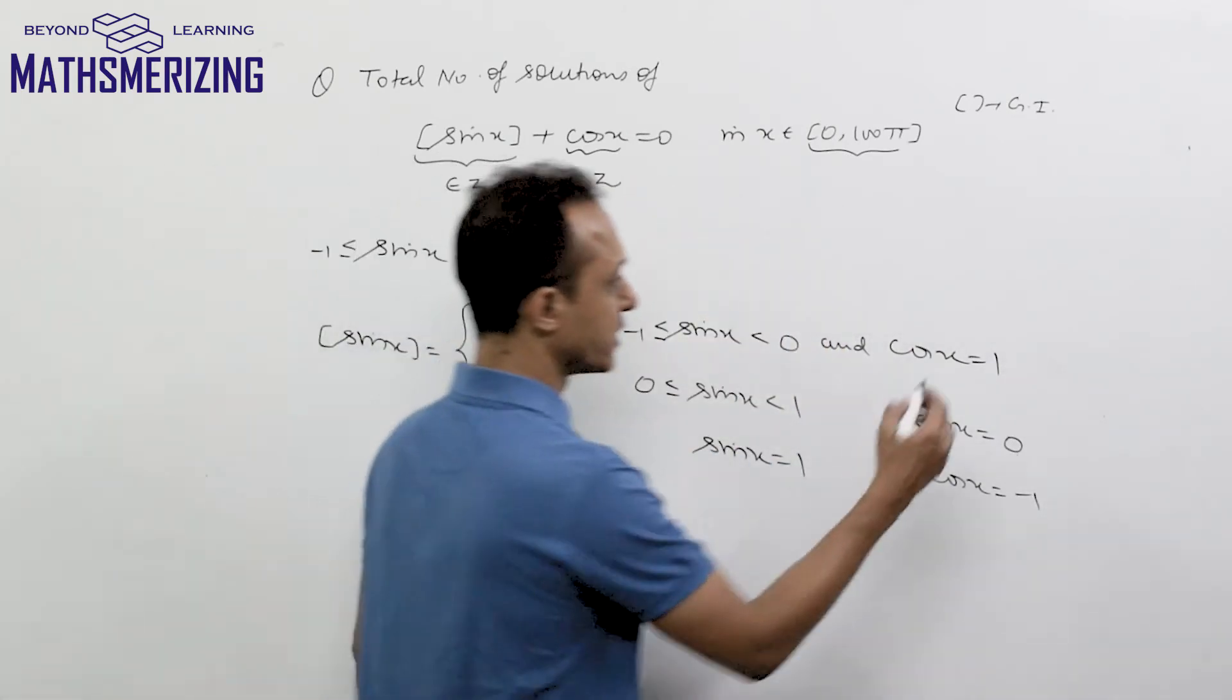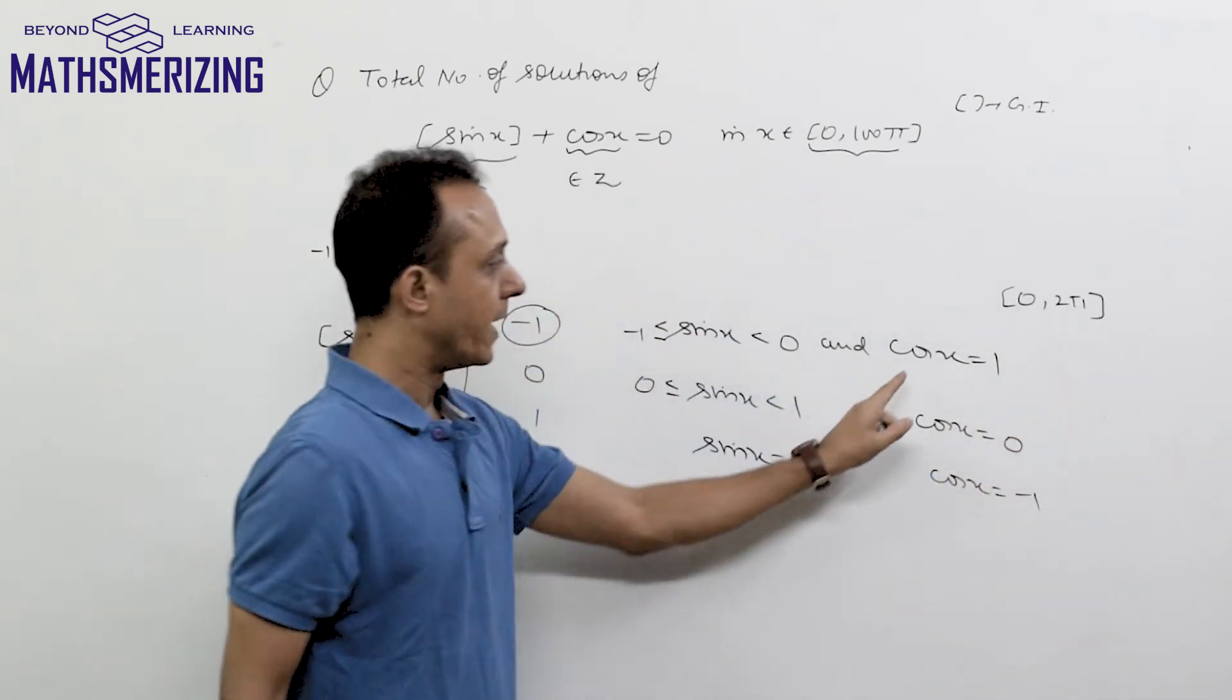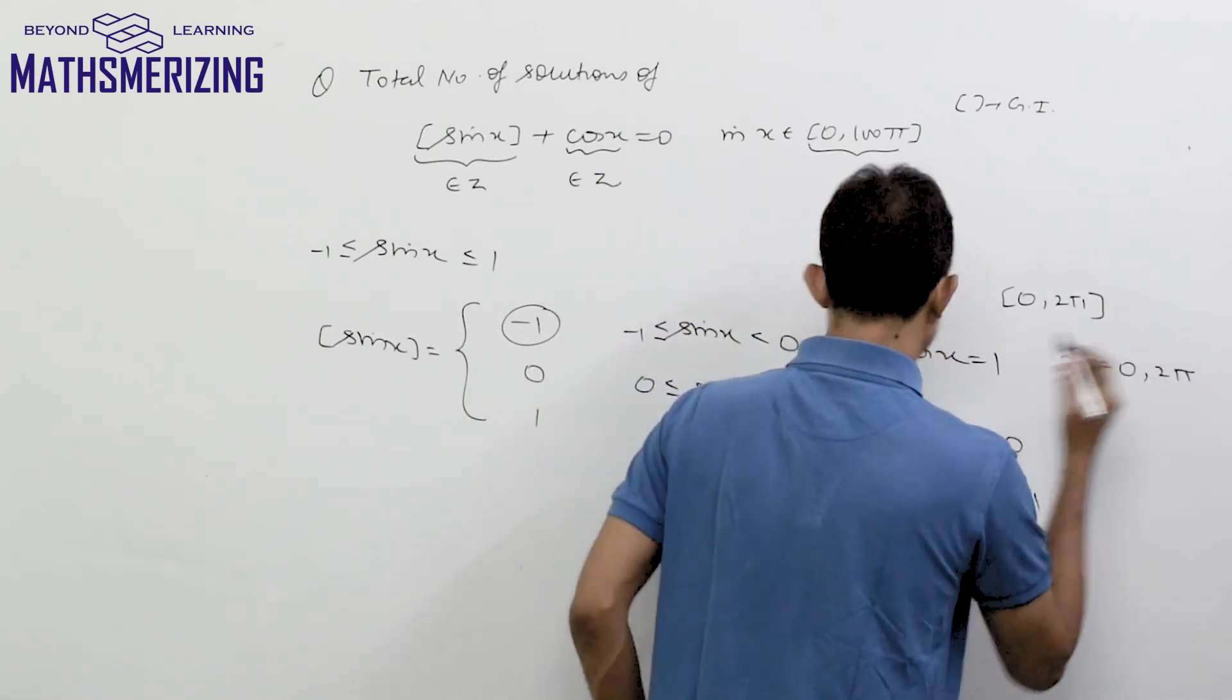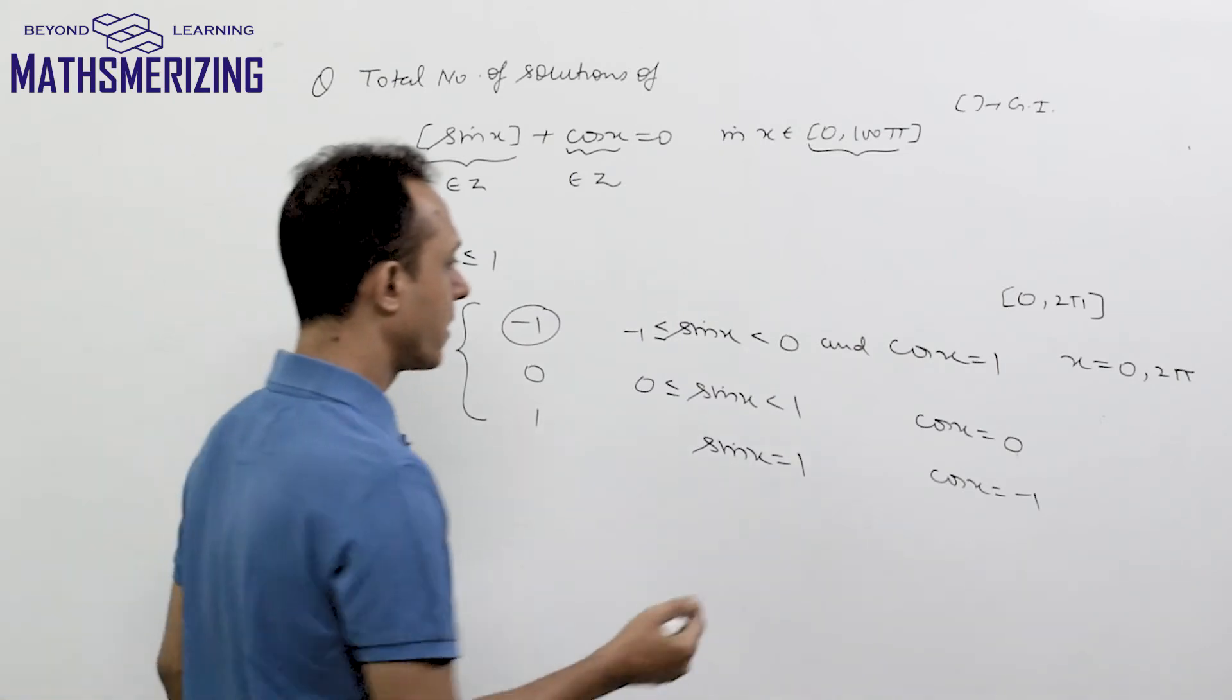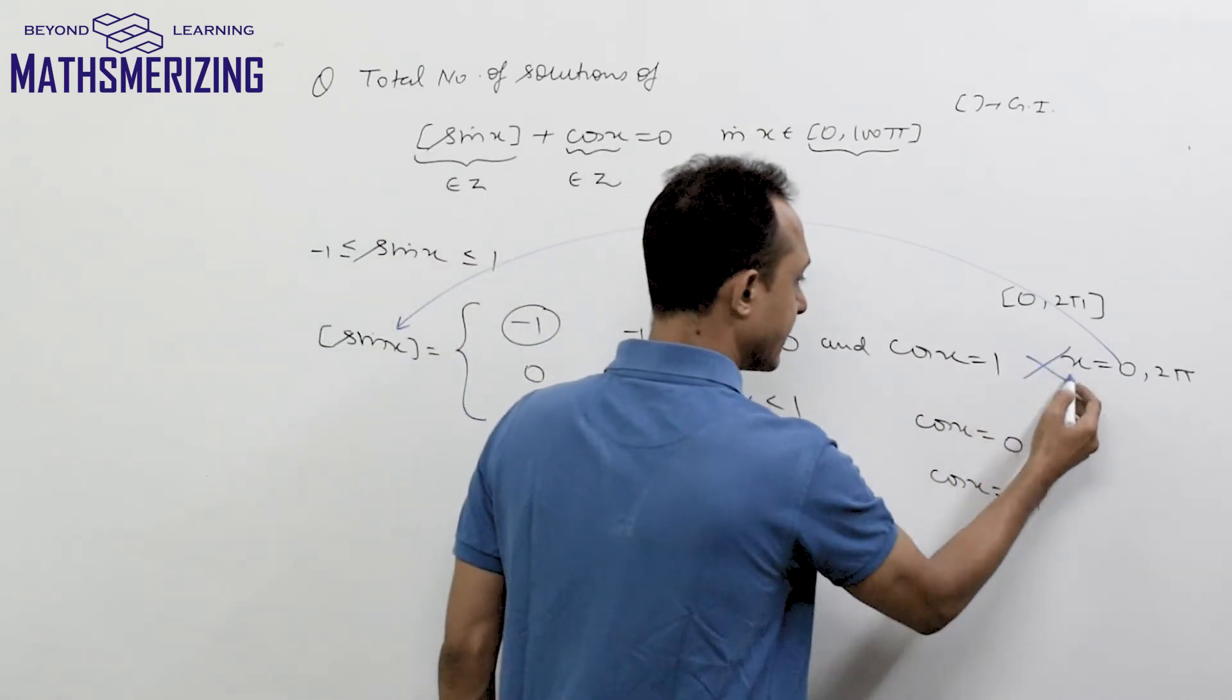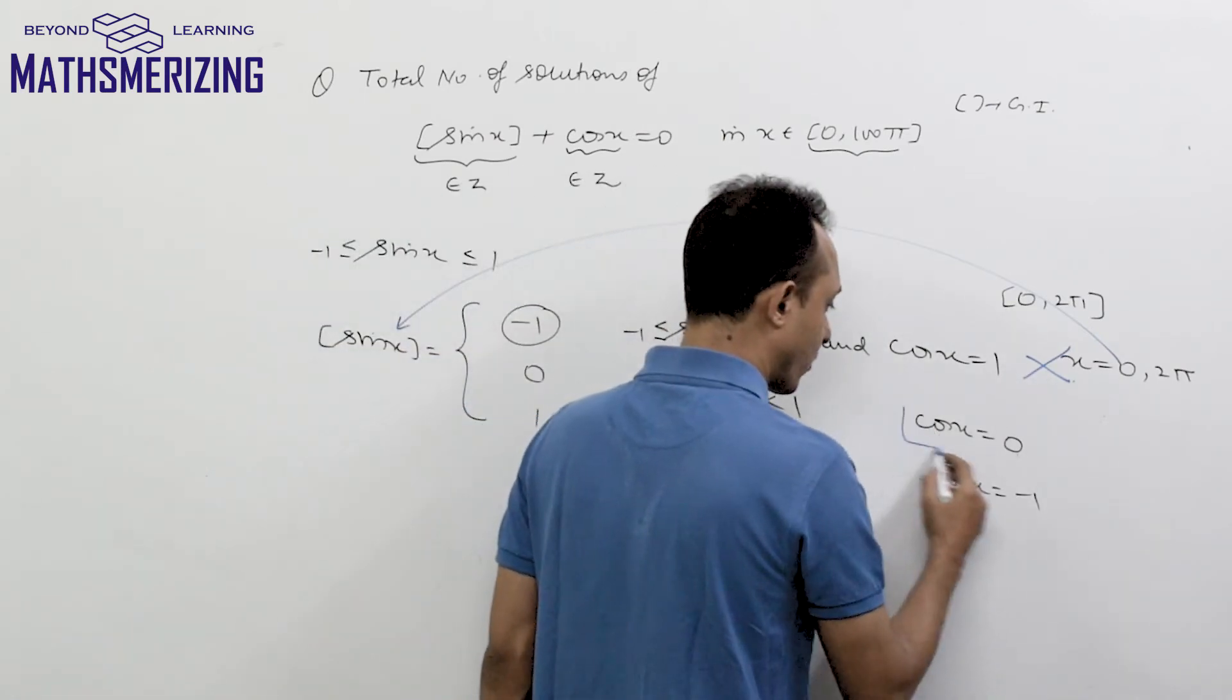I will find the solution in one fundamental period from 0 to 2π. cos x = 1 when x is 0 or 2π, but at these values sin x is 0, not -1, so this case has no solution.